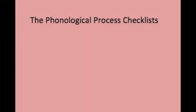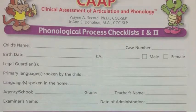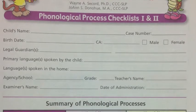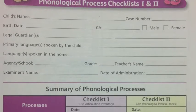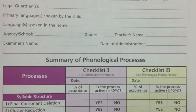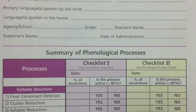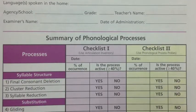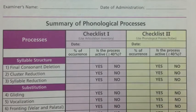The phonological process checklist is six pages in length. It provides scores that measure the occurrence of ten phonological processes. The first page provides an area for the clinician to fill out the client's information. Below that is a summary of phonological processes, which is where the percent of occurrence is recorded and whether it is an active process or not.